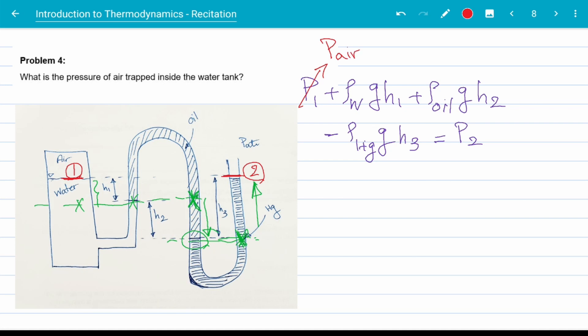We know p1 is the pressure of trapped air, and p2 is atmospheric pressure. Doing some algebra, we get the final equation.